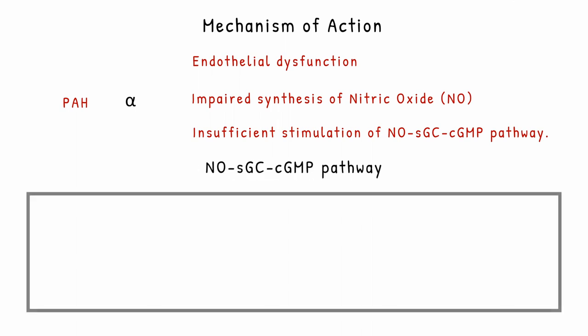Let's discuss this pathway in more detail, because Riociguat works within it. The ultimate endpoints Riociguat produces are vasodilation, leading to decreased blood pressure; anti-aggregation, where platelet aggregation is inhibited; and anti-remodeling, where blood vessel remodeling caused by hypertension is inhibited.